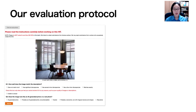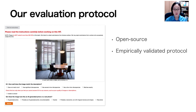To address the problems in human evaluation, we have created a standardized evaluation protocol that works with Amazon Mechanical Turk. The screenshot shows our simple annotation interface. It features two key questions focused on fidelity and alignment to text, allowing annotators to rate the images using a five-point scale. Our protocol is open source, and we tested various designs and chose the one with better inter-annotator agreement. We also provide a report template to help researchers share their results, promoting the inclusion of annotation quality assessment and other crucial details.